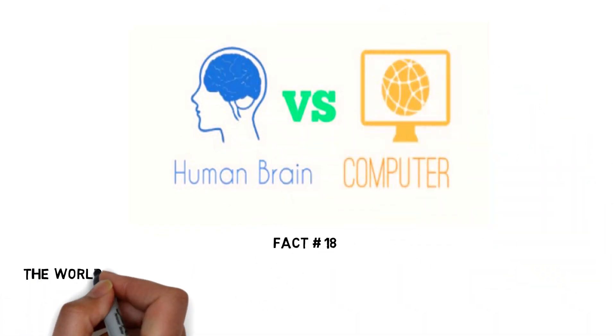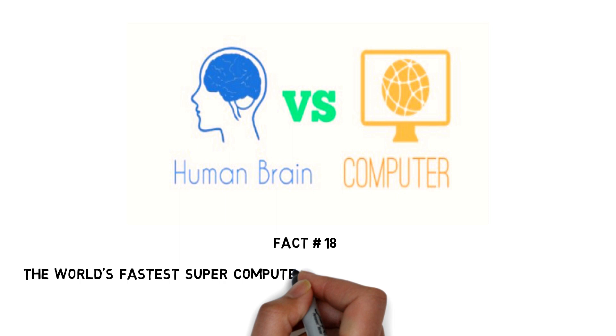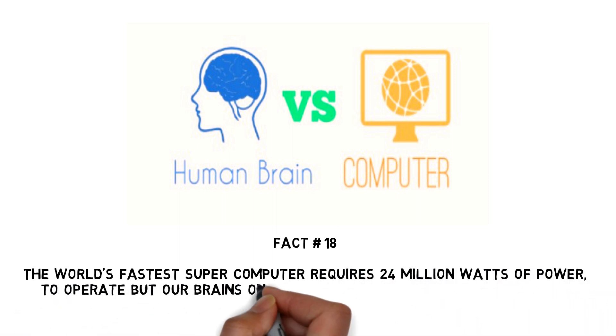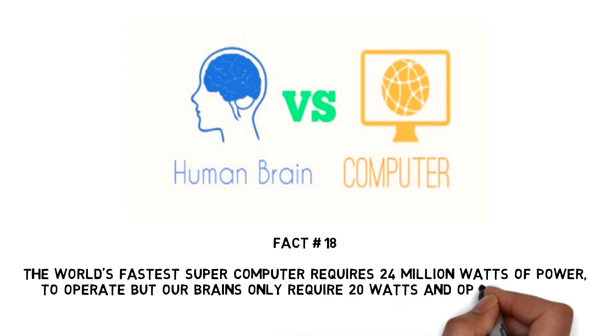Fact number 18: The world's fastest supercomputer requires 24 million watts of power to operate, but our brains only require 20 watts and operate about 100,000 times faster.